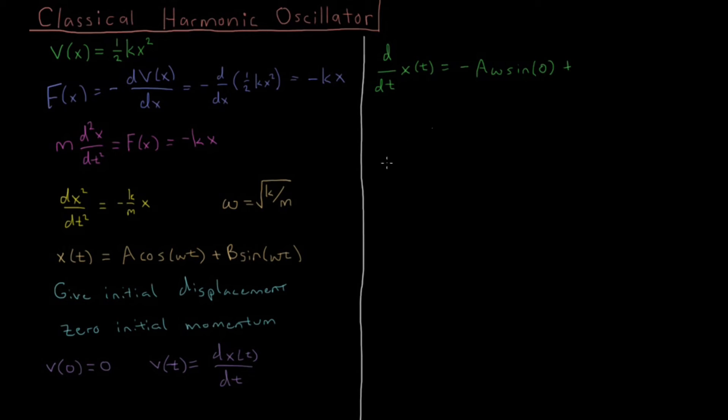...plus, derivative of sine is cosine, so plus B omega cosine, and the t term in there gives us zero.